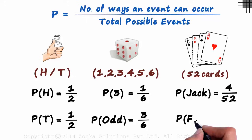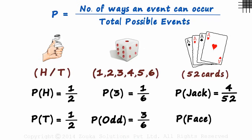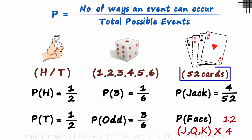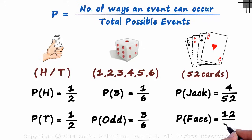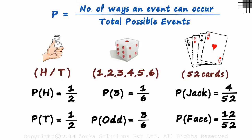What is the probability of picking a face card? There are twelve face cards — Jack, Queen, and King in each of the four suits. The total number of possibilities is fifty-two. So the probability of picking a face card from a pack of fifty-two cards is twelve over fifty-two. These are the three most common types of problems seen in exams. In the coming sessions, we will solve more problems based on these three examples.